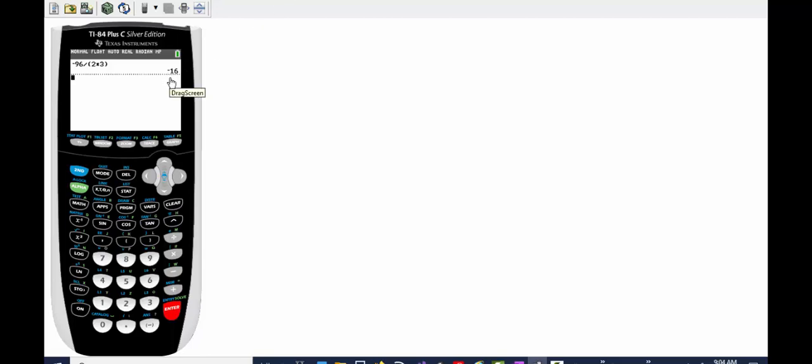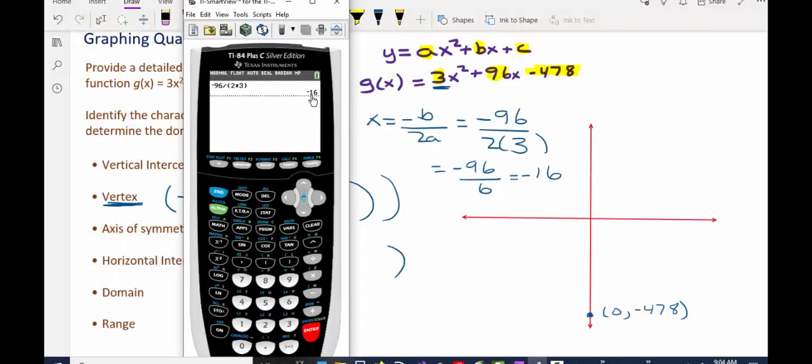So now there's a couple ways I can evaluate the function g at the input negative 16. One way is to store negative 16 into the variable x on the home screen. Since negative 16 is the last thing in my calculator, I can press the store key here. Then this key, which gives me the letter x, which tells the calculator to store the number negative 16 into the variable x.